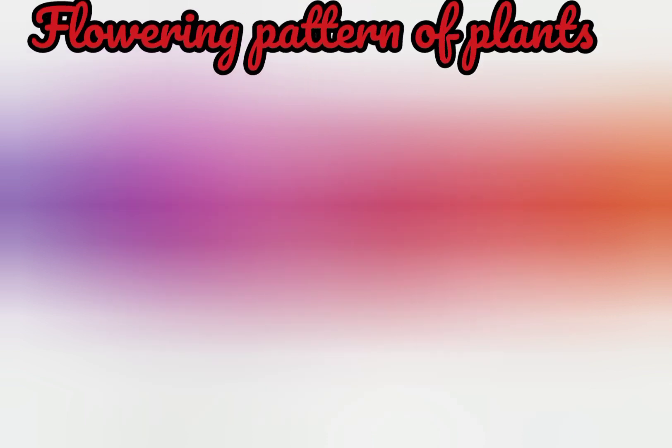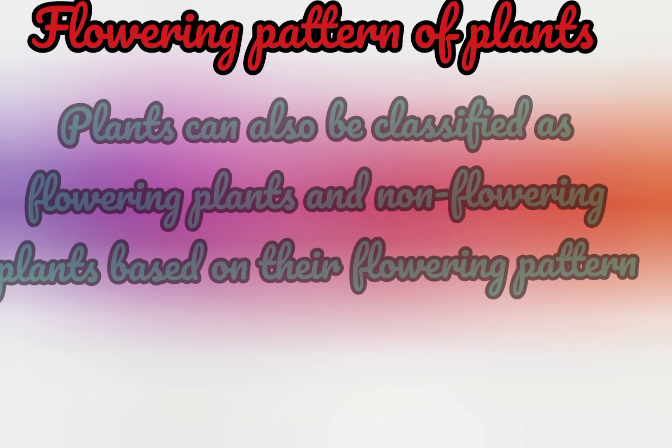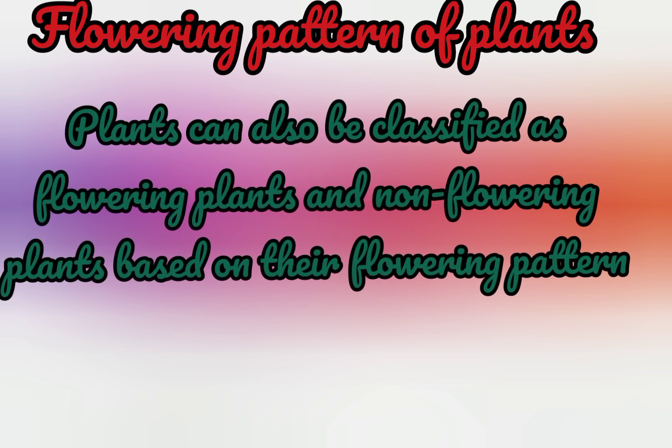Next, flowering pattern of plants. Plants can also be classified as flowering and non-flowering plants based on their flowering pattern. Pookkunnna rīdhiya nivisirichu sashyengalde — pookvidunna pookkal, pookvidattha pookkal — enndi inganai renda ahi tharandhi chitikku.